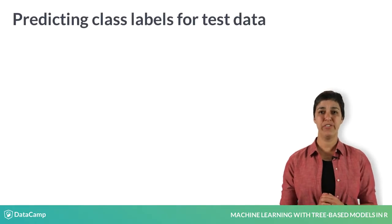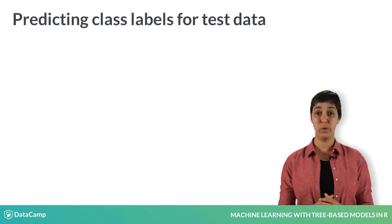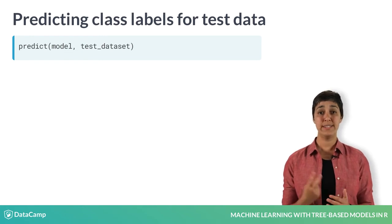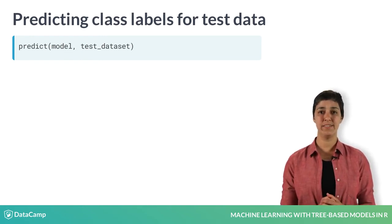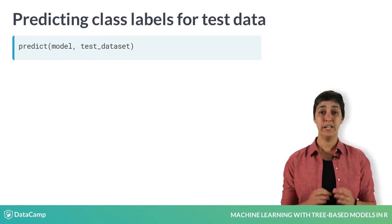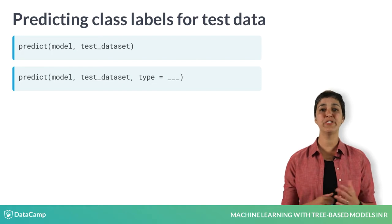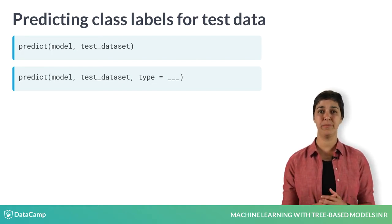Most machine learning packages in R have a predict function, where the first argument is the trained model and the second argument is the test data set. The rpart package has an extra argument, the type argument, which controls whether the function returns predicted labels or the raw predicted values.